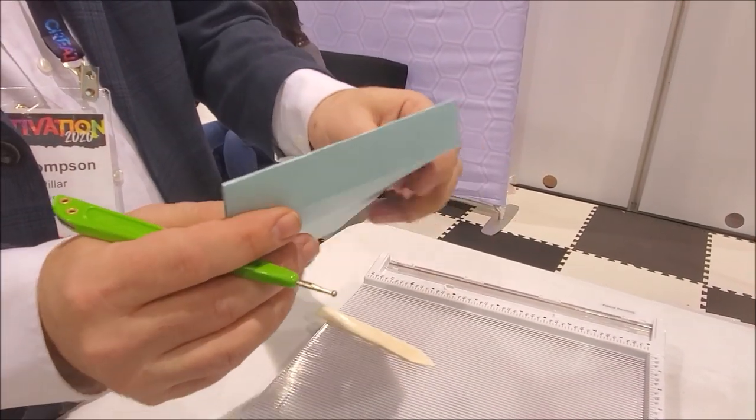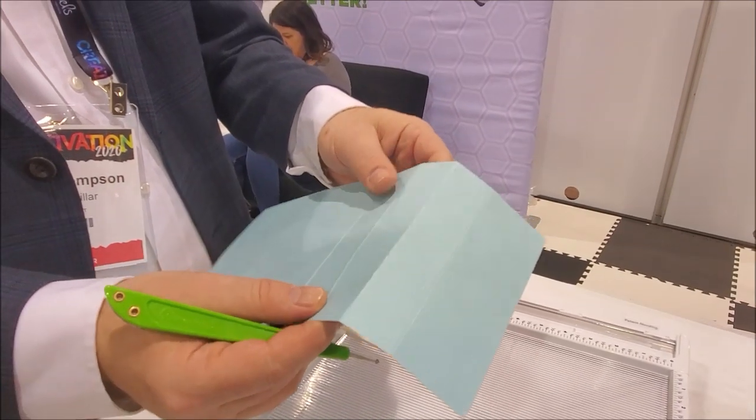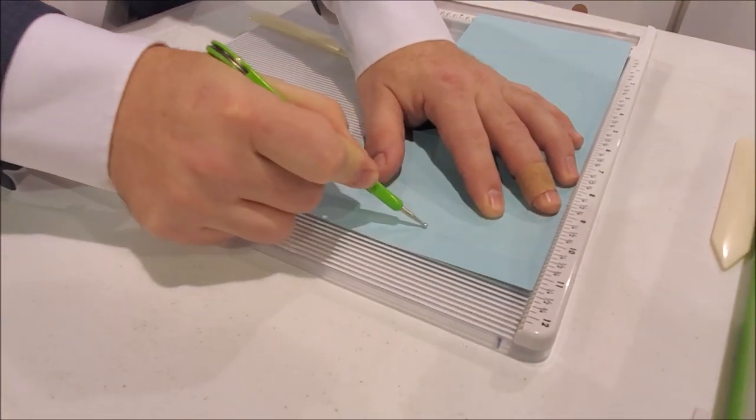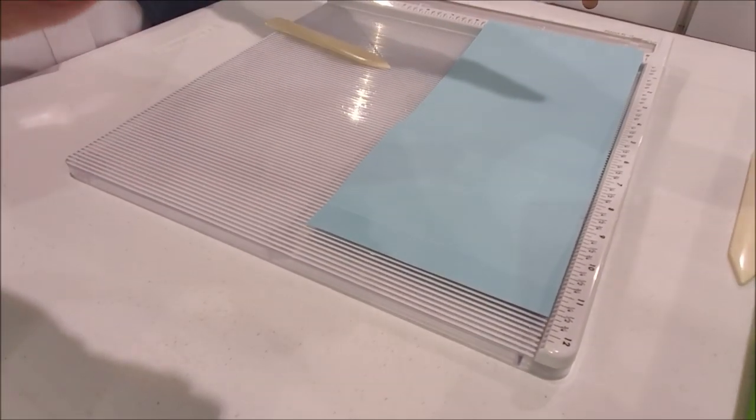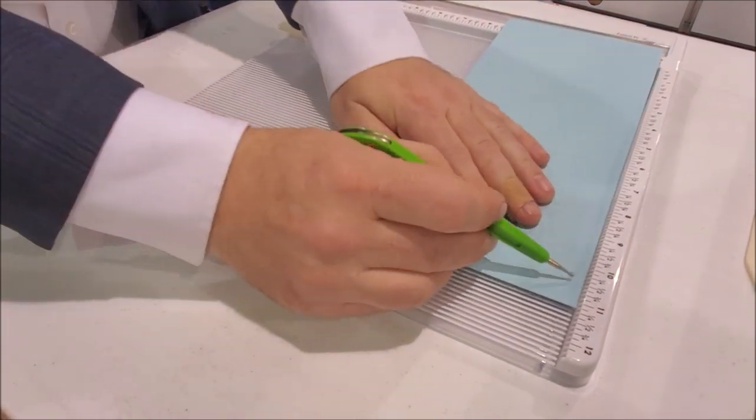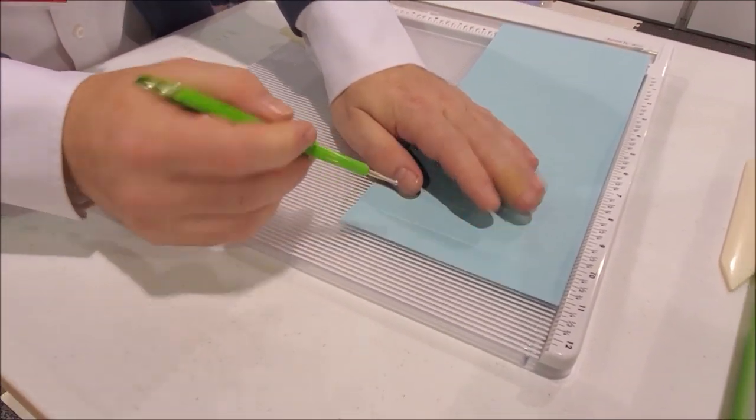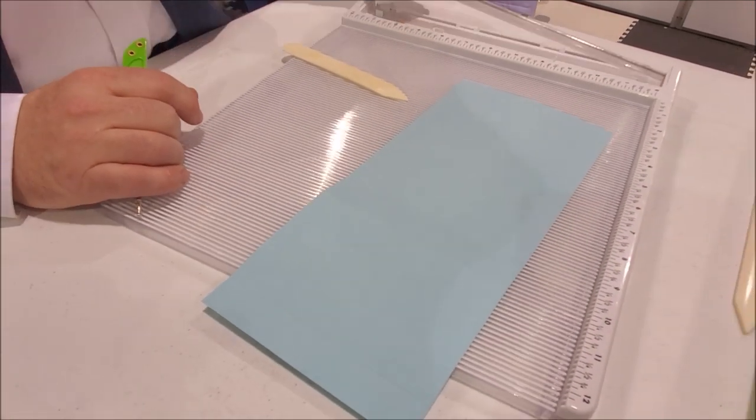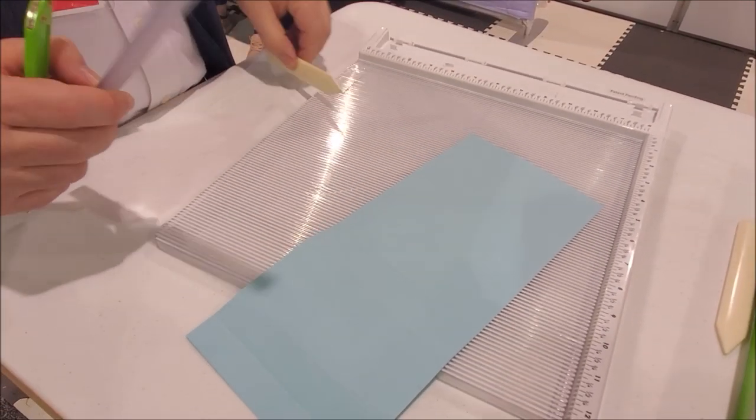We looked at this at a microscopic level. When you score this way, you're actually displacing the fiber, which means you're pushing it out of the way. So this channel here is always going to be thinner and it's going to be ugly.